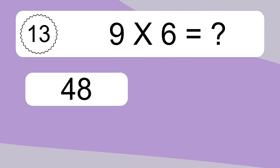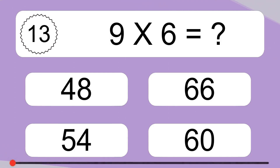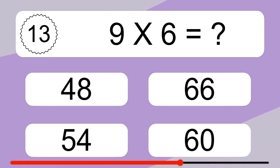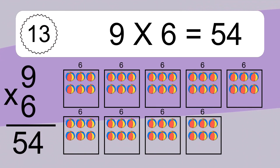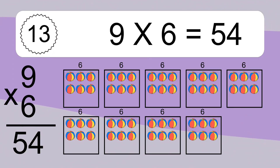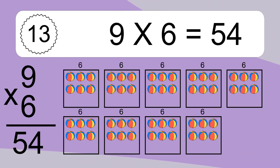9 times 6 equals what? 9 times 6 equals 54. We have 9 boxes, and each box has 6 colorful balls inside. If you count all the balls in all the boxes together, you will have 9 times 6 balls. This equals 54 balls.